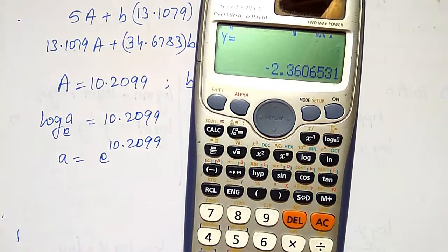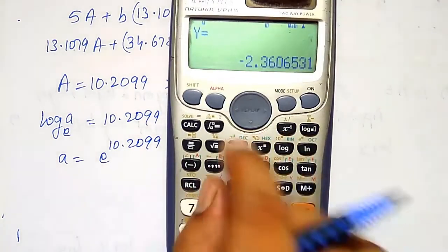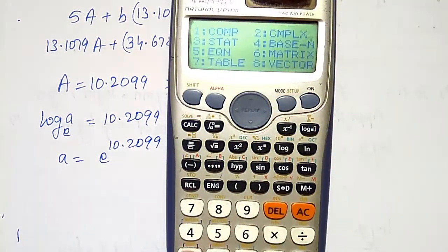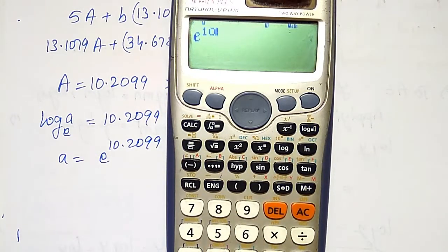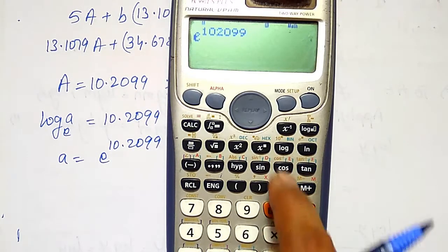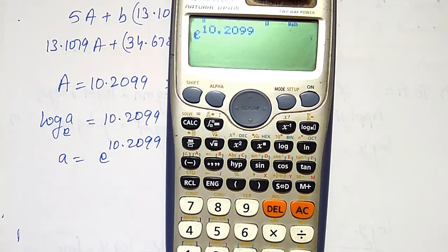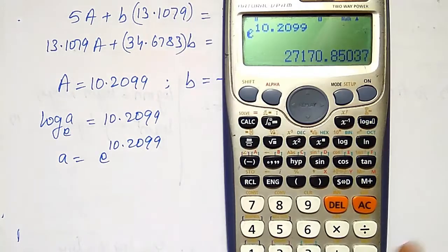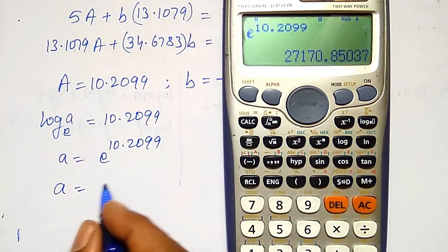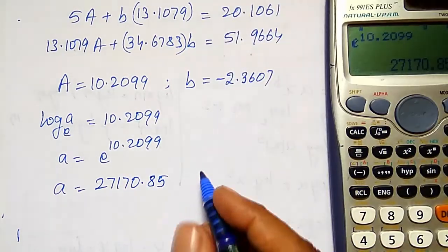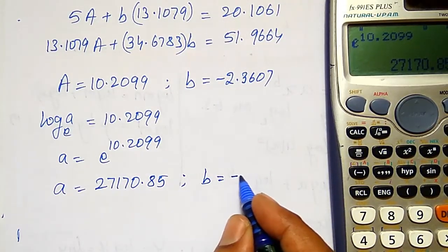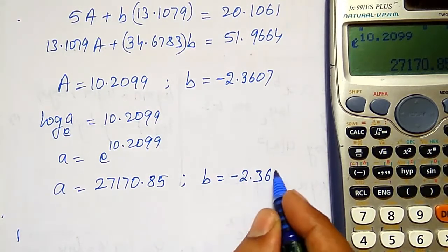In the calculator, using Shift-e (e to the power), I compute e^10.2099 = 27170.85. So small a = 27170.85 and small b = -2.3607 (already calculated).